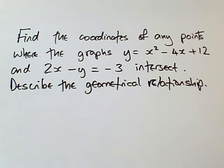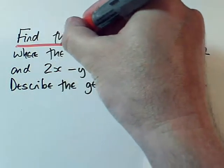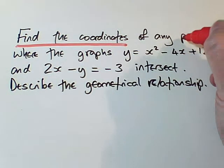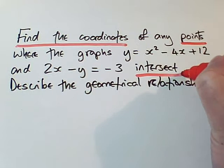Here's a question about graphs calling for a particular method. You have to find the words in the question that tell you what to do. So we've got to find coordinates, but what coordinates do we need to find? It's the points of intersection.